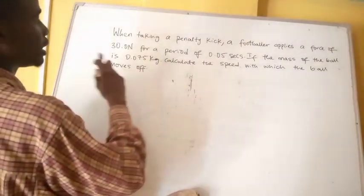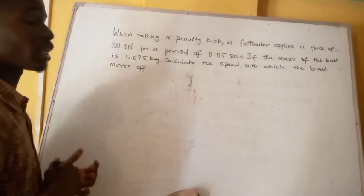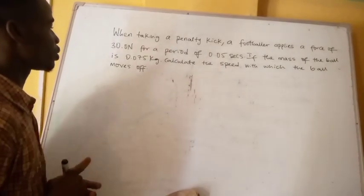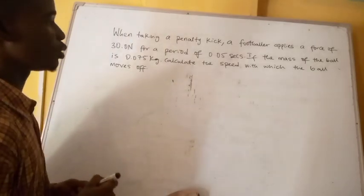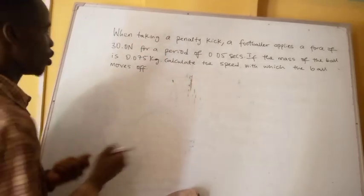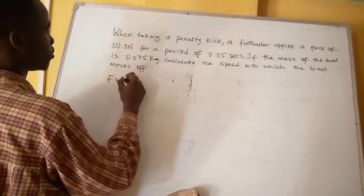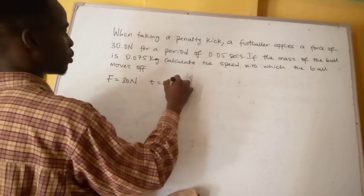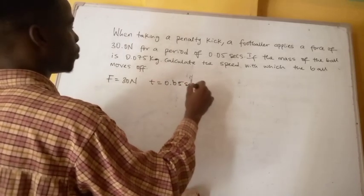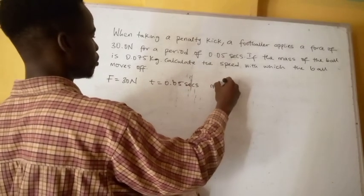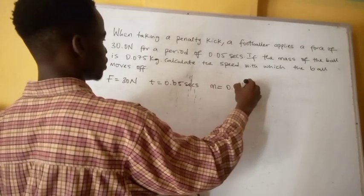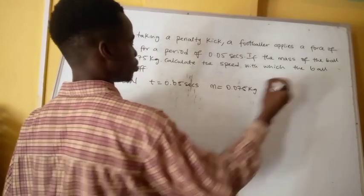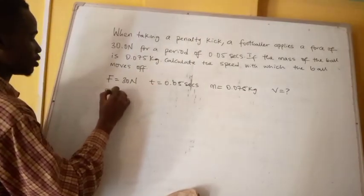Moving to the next question: when taking a penalty kick, if a player applies a force of 30 newtons for 0.05 seconds, and the mass of the ball is 0.075 kilograms, calculate the speed at which the ball moves off. So we have: force = 30 N, time = 0.05 s, mass = 0.075 kg, and velocity is unknown.